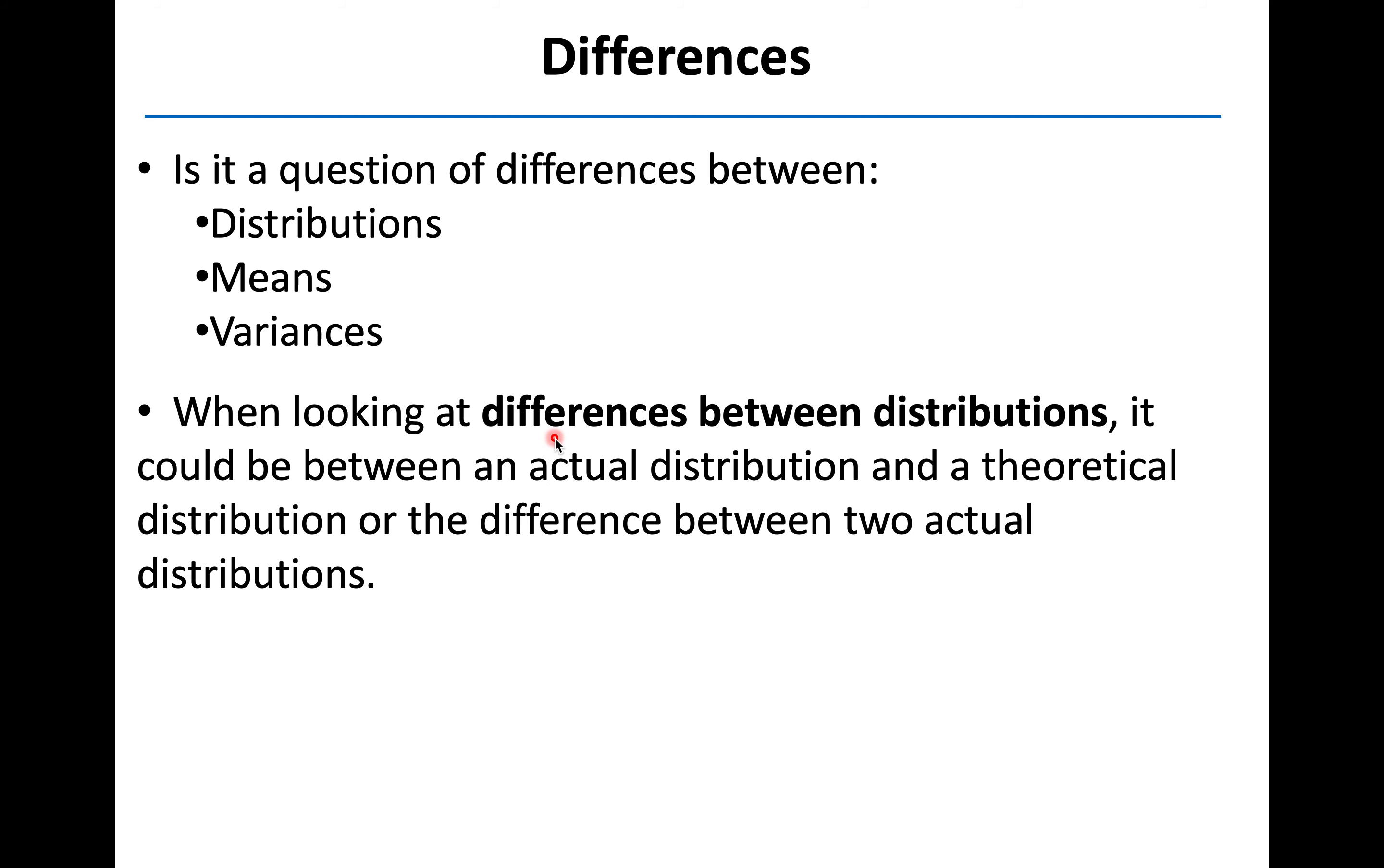If we're talking about differences between distributions, keep in mind, this could be between two actual distributions, or it could be between an actual distribution and what I'm going to call a theoretical distribution. Maybe you have some data set. Well, if these two things were correlated, this is what our theoretical distribution would look like. So we're going to compare the data we actually got to this theoretical data set, and see how close we are. So both of those would be possibilities.